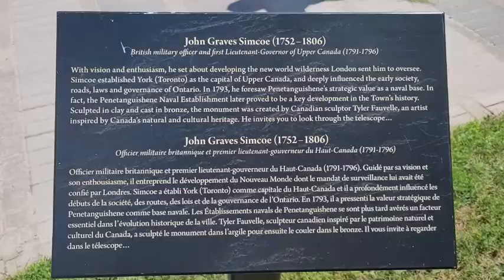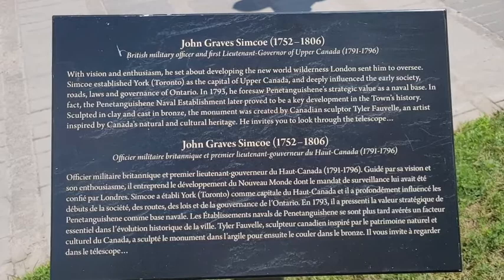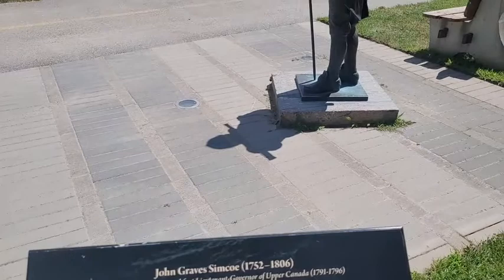As lieutenant governor of Upper Canada he had many successes. He introduced court systems and trial by jury, freehold land tenure — which was important for Canada's development — but probably the most important thing that John Graves Simcoe did was that he started the road to the abolition of slavery.